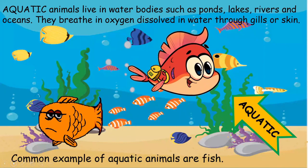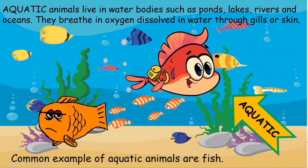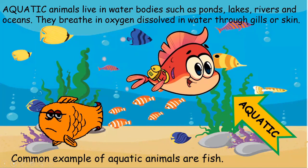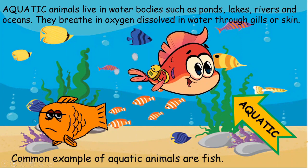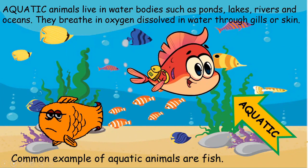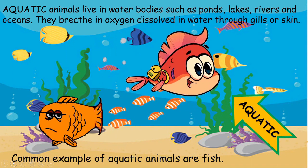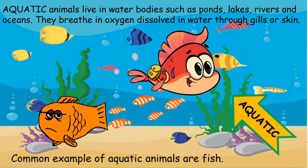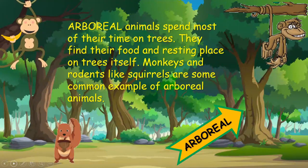Aquatic animals live in water bodies such as ponds, lakes, rivers, and oceans. They breathe in oxygen dissolved in water through gills or skin. The most common example of an aquatic animal is fish.